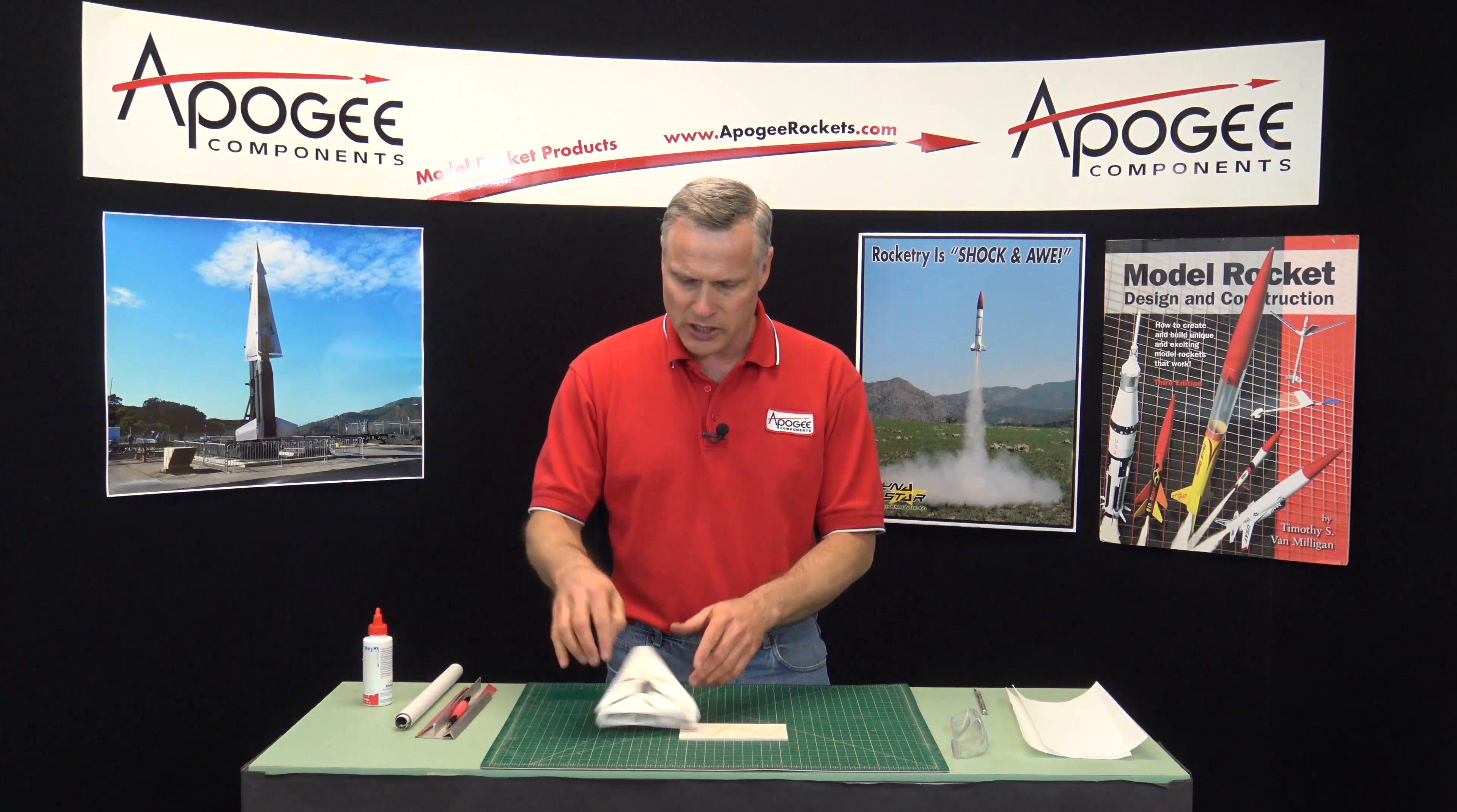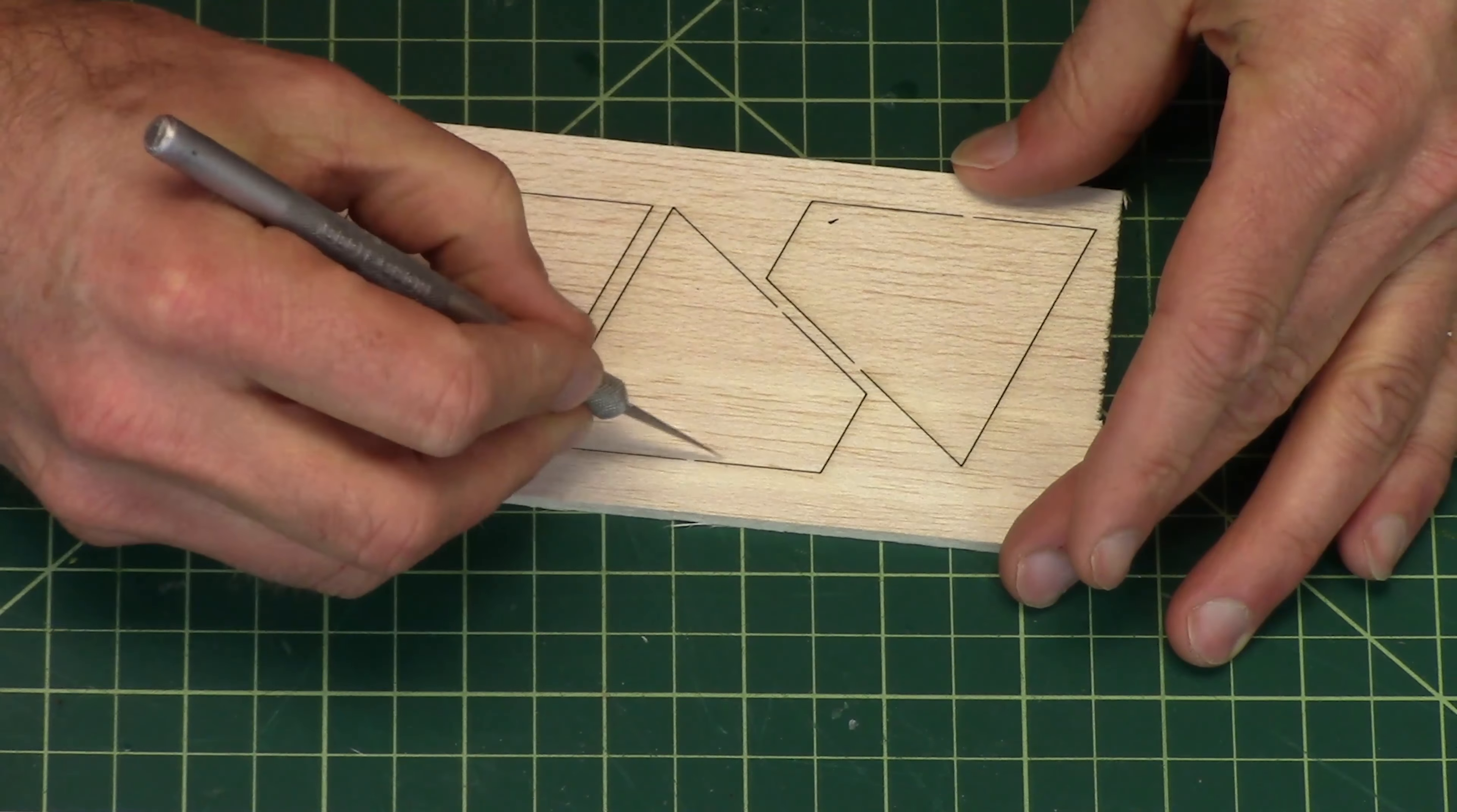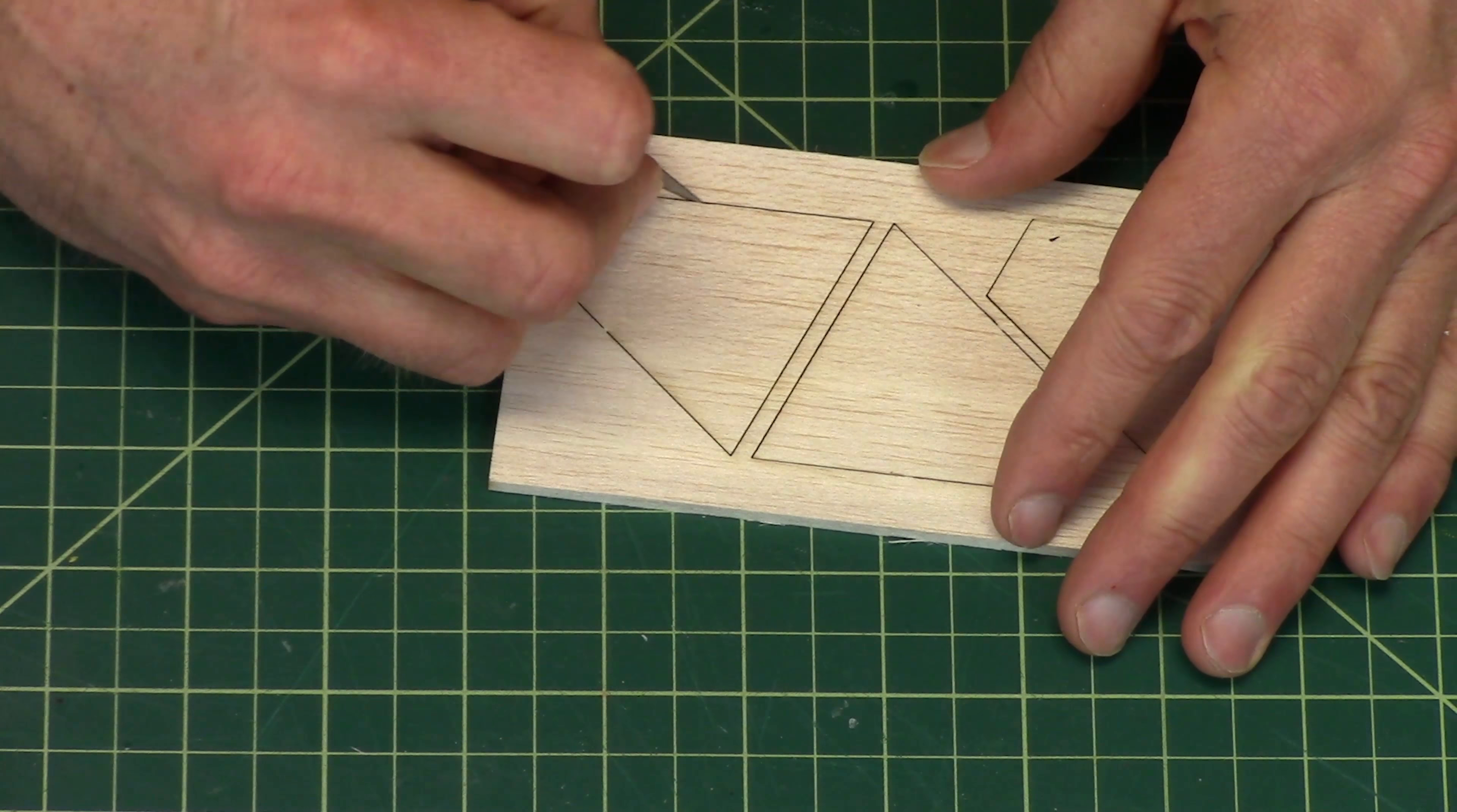So here I have my body tube and I've already drawn my lines down the tube to get ready for attaching the fins. These are the fins that I'm going to use, and these are laser cut fins. I'll quickly remove them from the fin sheet. See the little tabs right here. You just cut those with a hobby knife and that releases it from the wood. These are laser cut so they should all be pretty precise in the shape of the fins.